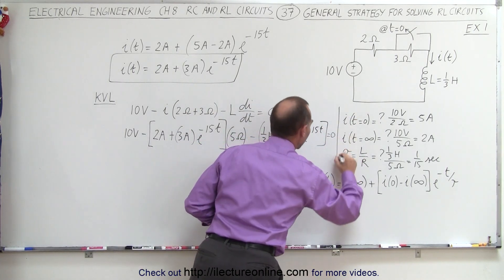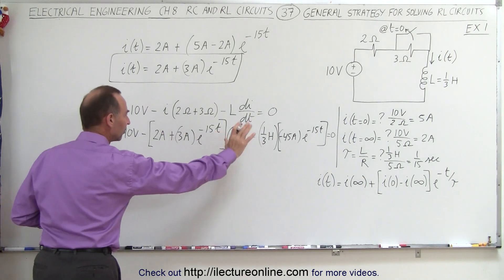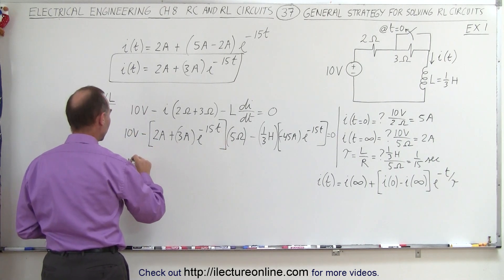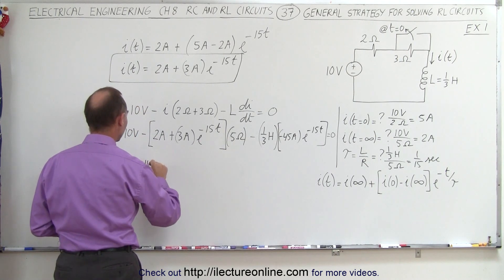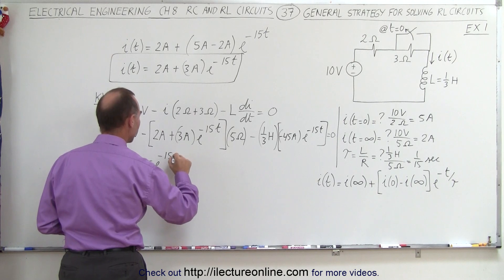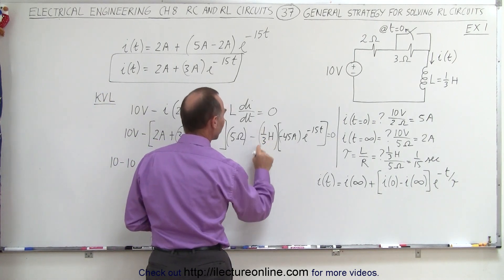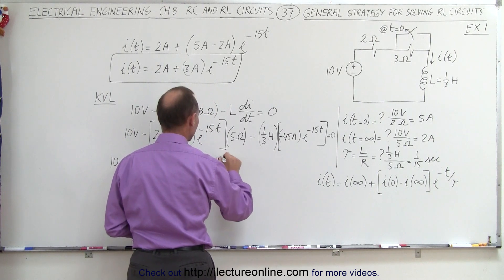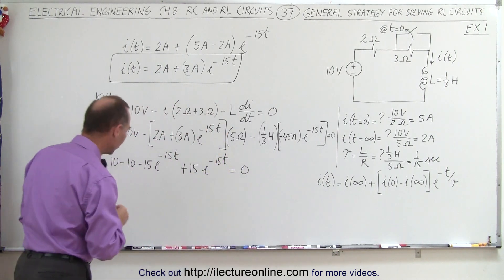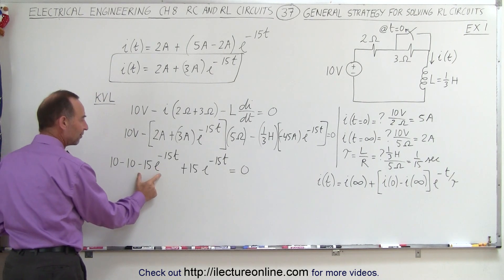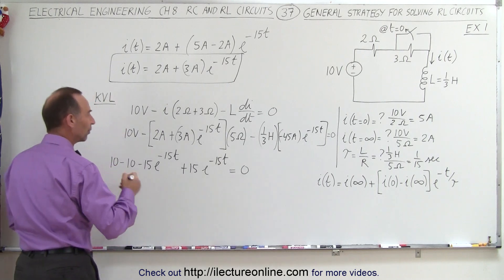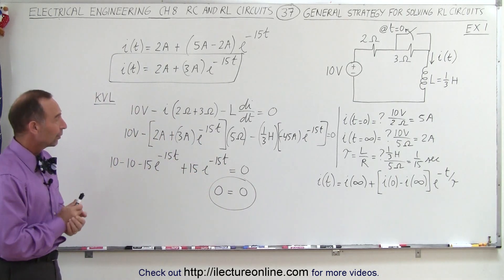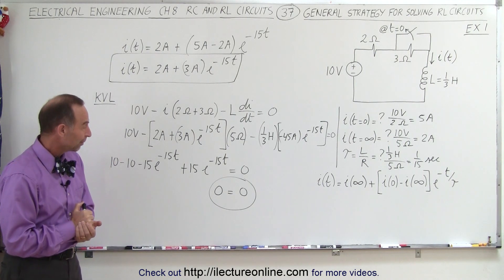Simplifying, the left side should equal zero. We have 10 minus 2 times 5, which is minus 10, and minus 3 times 5, that's minus 15 e to the minus 15t. Then we have minus 1/3 times minus 45, which is plus 15 times e to the minus 15t. That should equal zero — and it does, because 10 minus 10 is zero, and minus 15 e^(-15t) plus 15 e^(-15t) also equals zero. So zero equals zero, which means our solutions for the current were correct. That's how you solve a simple RL problem.